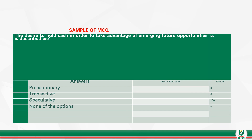Another sample multiple choice question: the desire to hold cash in order to take advantage of emerging future opportunities is described as what? Recall that when we looked at the motives for holding money, we defined them according to Keynes as precautionary motive, transactional motive, and speculative motive — also known as the demand for holding money. In this instance, the answer is speculative, as it suggests the reason for holding money to take advantage of emerging future opportunities.